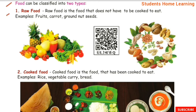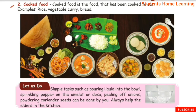Raw food is food that does not have to be cooked to eat. Let us do simple tasks such as pouring liquid into a bowl, sprinkling pepper on the omelette or dough, peeling onions, and powdering coriander seeds. Always help the elders in the kitchen.